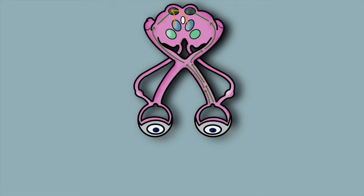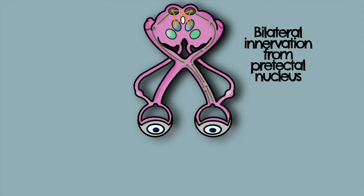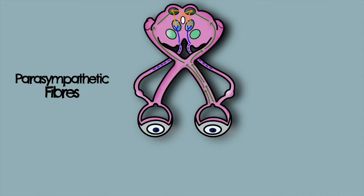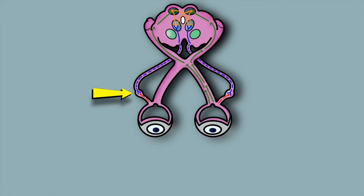The pre-tectal nucleus then bilaterally projects to the Edinger-Westphal nuclei. Parasympathetic fibres from the Edinger-Westphal nuclei then travel with the ocular motor nerve to innervate the ciliary ganglia. Finally, short ciliary nerves project to innervate the sphincter pupillae muscle of the iris to contract it, resulting in constriction of both pupils.